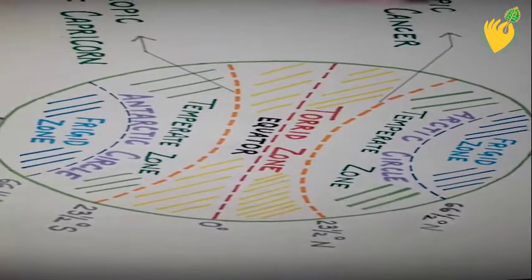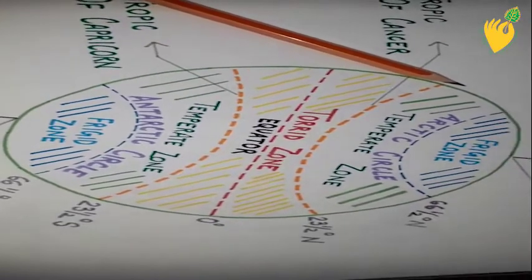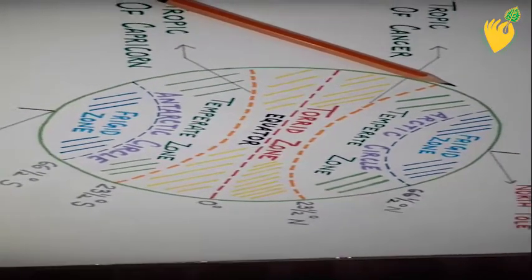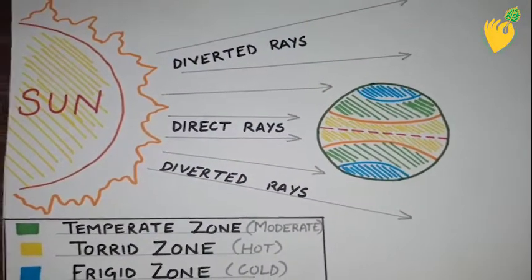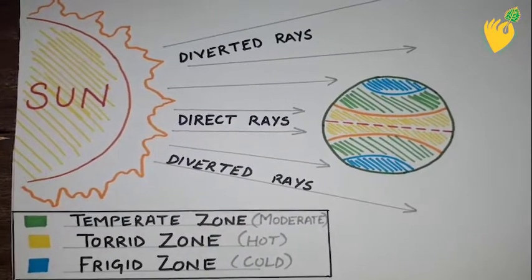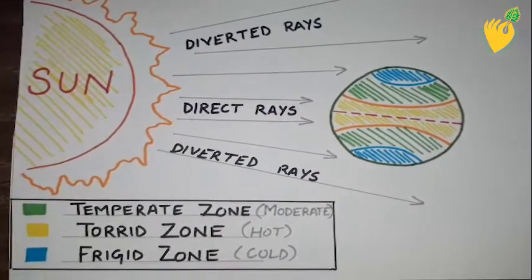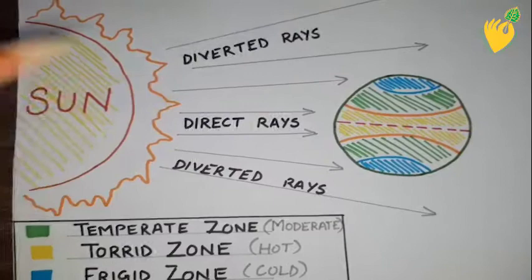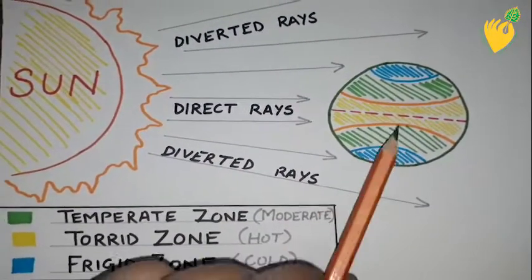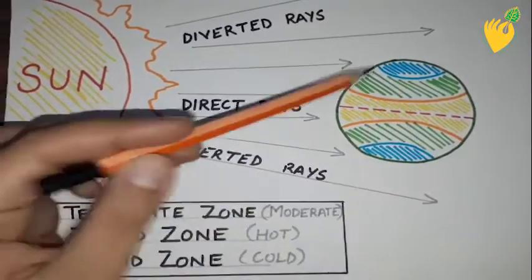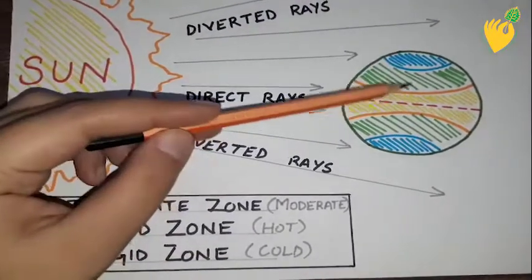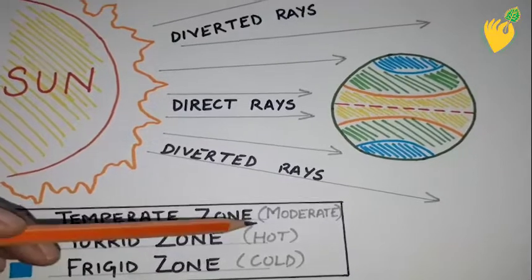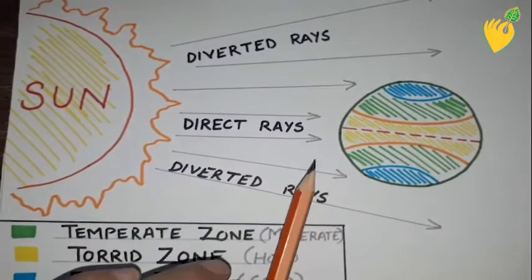This was the overall picture of the different heat zones of the earth, which have different climatic conditions and temperatures according to the amount of sunlight they receive. To understand why different regions receive different climates and temperatures, here the sun is placed in the center and the earth is at a distance from it. The different heat zones are shown with colors: blue for the frigid zone, green for the temperate zone, and yellow for the torrid zone.